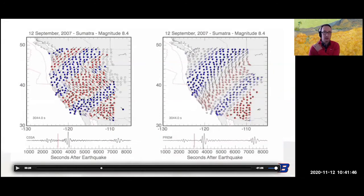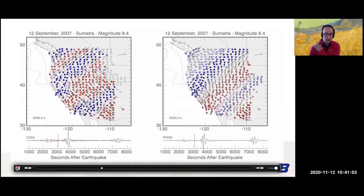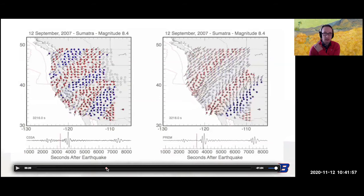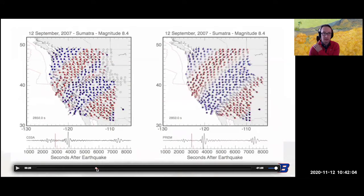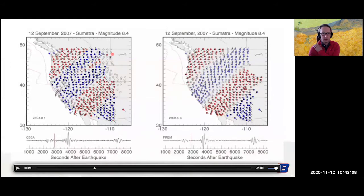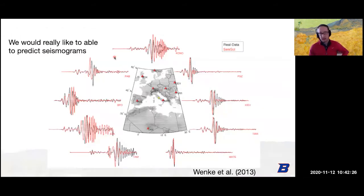What we would really like to be able to do as seismologists is predict this kind of behavior. As you keep going in this video, at certain places we start missing complete parts of the wave field — the wave is moving up instead of down, whereas we completely miss that in the simulation. Our goal as seismologists when we say we want to resolve the structure of the earth is to resolve it to the degree that we can predict it. The reason we want to predict things is primarily from a hazard point of view.